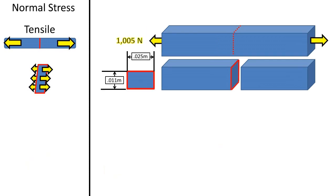So if the force acting 90 degrees perpendicular to the cross-sectional plane is pulling the object apart, it is in tension and has a tensile stress.